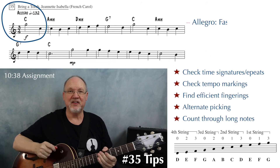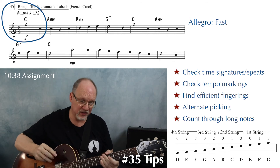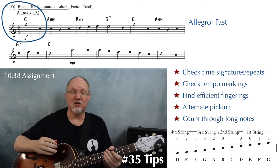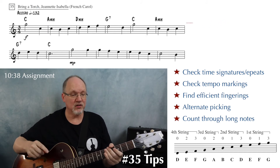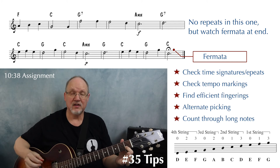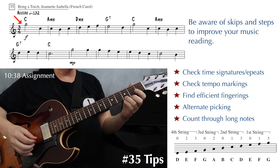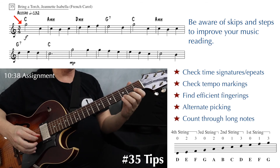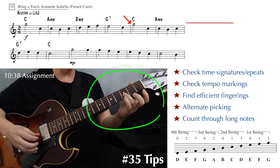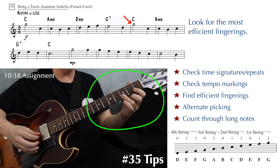Number 35, Bring a Torch Jeanette Isabella — one of my favorite Christmas carols. It's in 3/4 time and it's marked Allegro, quarter equals 132. With the metronome you can hear that 132 is pretty brisk. The good news is there are no eighth notes — the quarter note is the fastest in this one, so it's not too bad even at quarter equals 132. Look through it for repeats — there are no repeats. However, the last note of the whole song has a fermata above that C, so you're going to hold that for however long you want. Starting at the beginning, we have a big skip from G to C — just be ready for that.